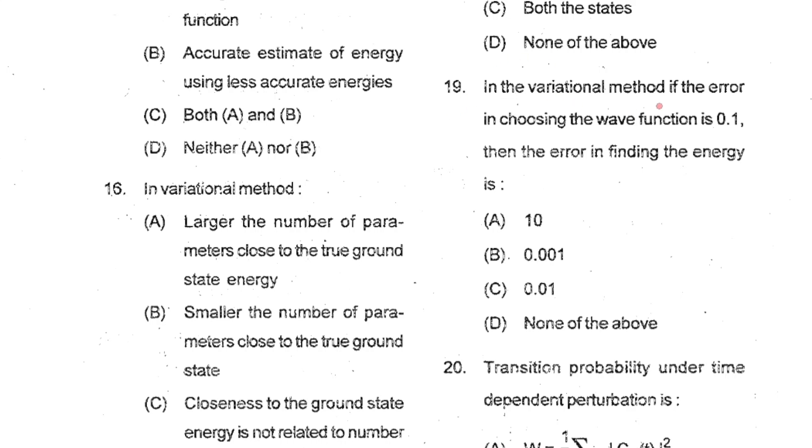Question 19: In the variational method, if the error in choosing the wave function is 0.1, then the error in finding the energy is 0.01. So your correct option is option C. Let the error in wave function be 0.1. The error in finding the energy will be ΔE equals Δψ squared divided by normalization of the wave function. Considering this normalization condition to be one, then this error in the energy will depend on this value. If you take the square of this quantity 0.1, you will get 0.01. So your correct option will be option C.